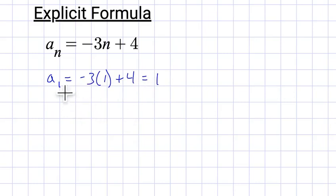So coincidentally, the first term equals 1. So notice that to get the first term, all we had to do is plug in 1 for n. So to get the second term, we just plug in 2. That's negative 6 plus 4. We'll notice the numbers are getting smaller. In fact, it went down by 3.